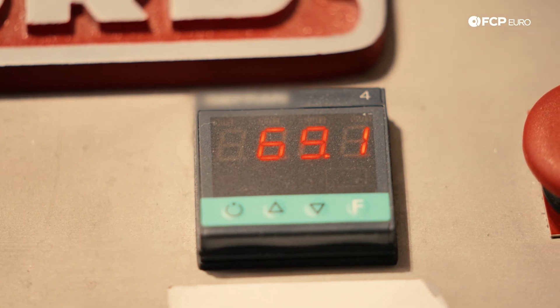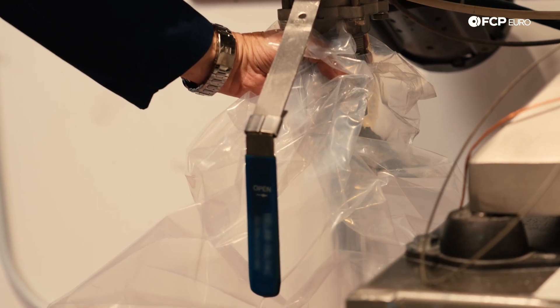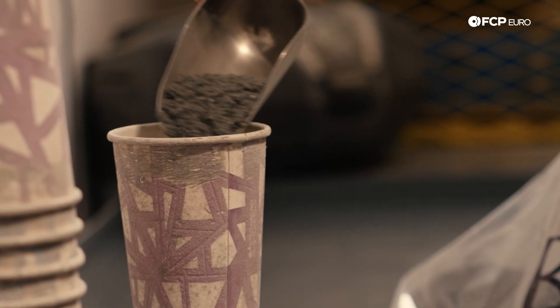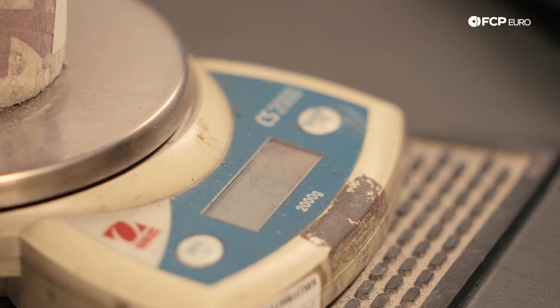After the mixing is complete, it's emptied out into a bag, and then enough of the mixture for each pad separately gets measured out before the next step of the process. Each blend has a specific target weight depending on the compound type, pad shape, size, and application.